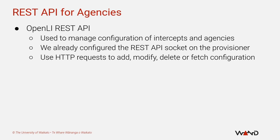Now that our agency is up and running, we need to tell the OpenLI mediator how to reach it. For this we're going to use the OpenLI REST API for the first time. A REST API is simply a system whereby you can send HTTP requests to a running service to trigger that service to perform certain actions. The OpenLI REST API supports requests that can add, modify, delete, or fetch the configuration for the current set of running intercepts, including the agencies that will be receiving those intercepts. Any configuration changes made through the REST API will be immediately propagated through the OpenLI components by the provisioner, without any component needing to be restarted or any config files needing to be edited by hand.